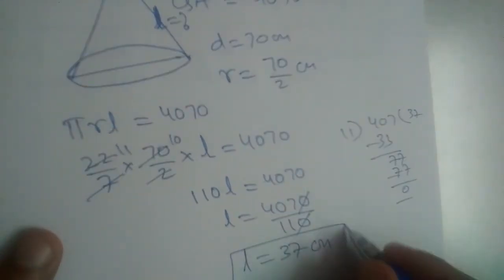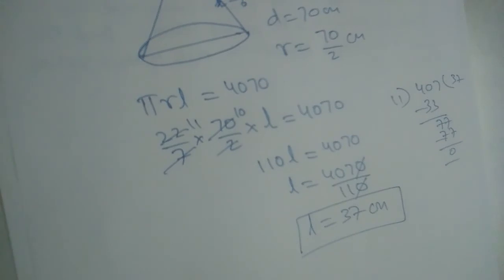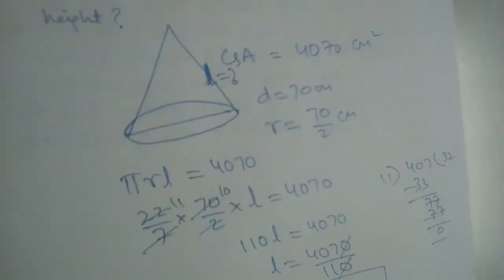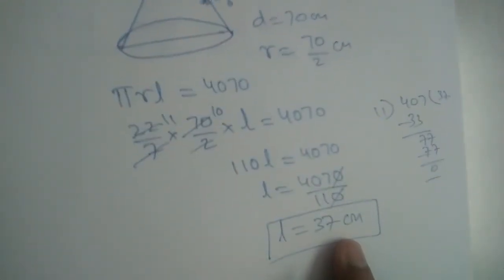So length is equal to 37 cm. Sorry, not length - slant height. Slant height is 37 cm.